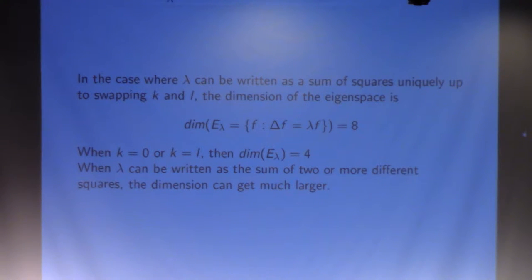But if k is zero or k equals l, you actually have a four-dimensional eigenspace because you're kind of just doubling up on your eigenfunctions. And if lambda can be written as sum of two or more different squares, then you can get much larger eigenspaces.